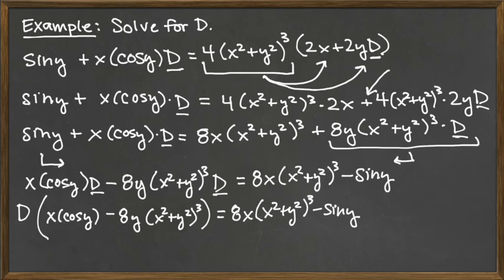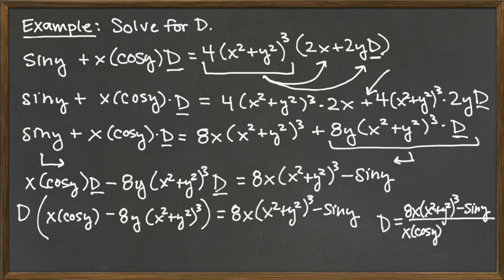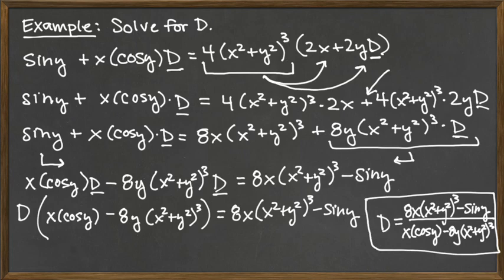Now I'm just a step away from finished. To get d by itself, we divide both sides of the equation by the stuff in parentheses multiplying d. So in the end, d equals a big fraction: the numerator is 8x times x squared plus y squared raised to the third power minus sine of y, and the denominator is x times cosine of y minus 8y times x squared plus y squared raised to the third power. That completes our solving for d in this fairly involved equation.